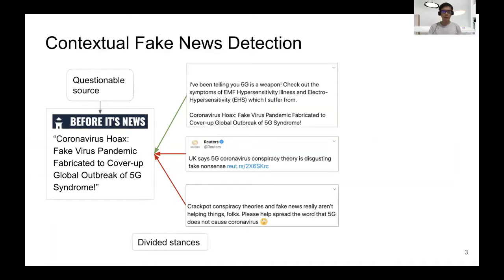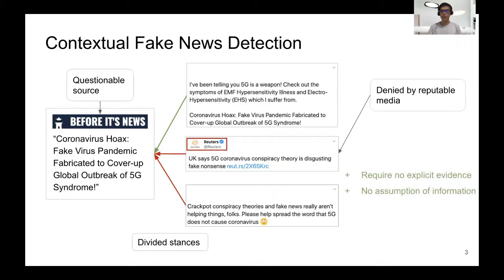If the source has a history of publishing false information, and the news itself divides public opinion, not to mention that it is also denied by reputable media, it is highly likely that this piece of news is fake. This approach has the advantage of requiring no explicit evidence and making no assumptions of information type, but it can be less explainable compared to evidence-based fact-checking.